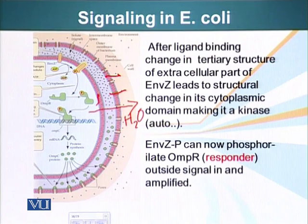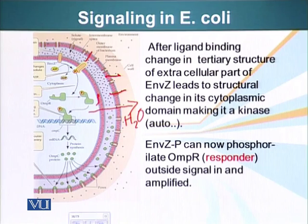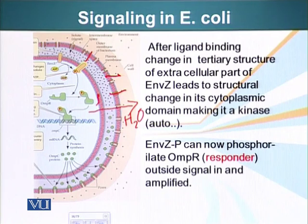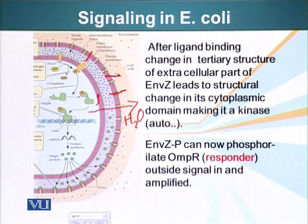Once the solute concentration increases in the intramembranous space, there is a receptor present in the inner membrane of this bacteria. This receptor is called NZ — I'll point it out here, right here. When a solute molecule attaches to NZ, NZ goes through a conformational change. This conformational change affects the cytoplasmic domain of this receptor. A region of this molecule which has a kinase activity — an enzymatic activity that can attach a phosphate group — is now unfolded and available. It uses an ATP and puts one of the phosphate groups from ATP onto the cytoplasmic domain of this receptor.